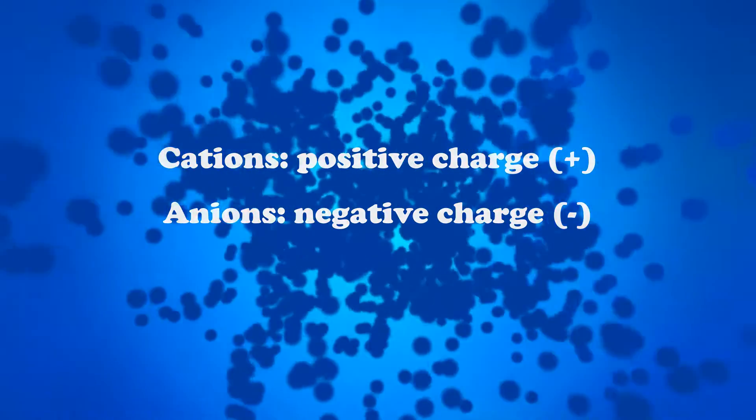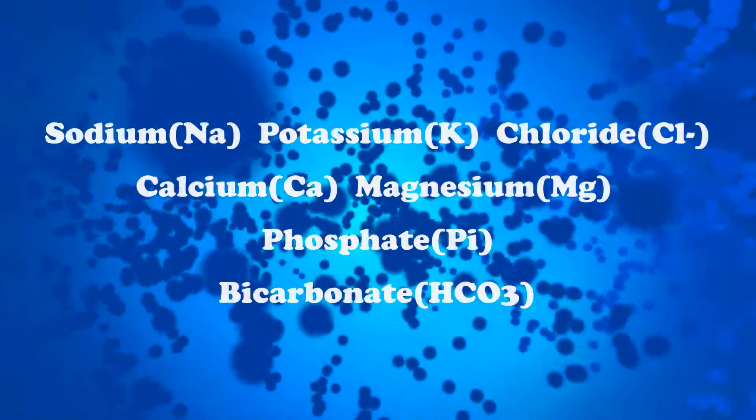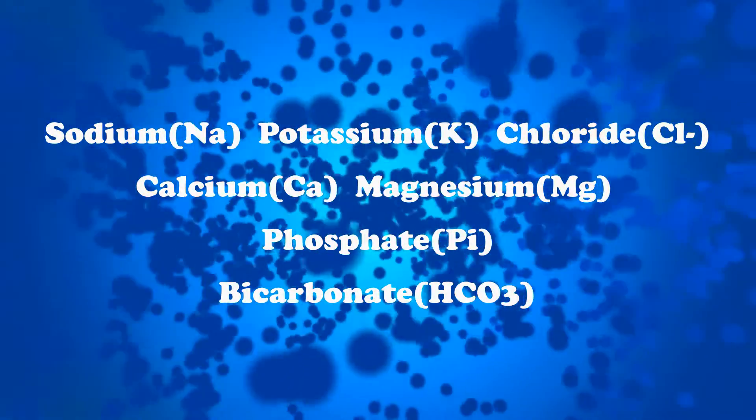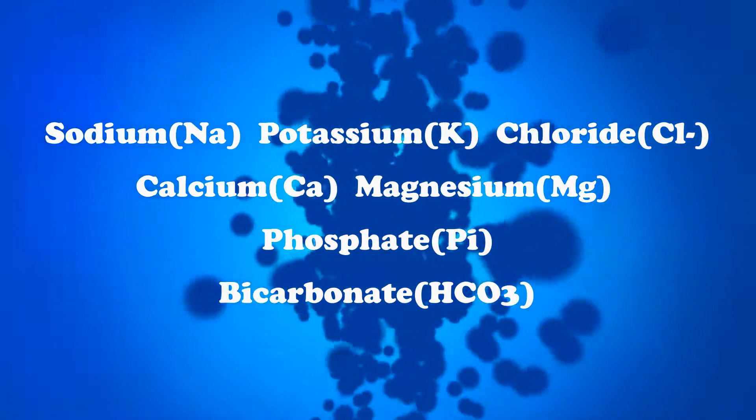The main electrolytes that we find in our bodies are sodium, potassium, chloride, calcium, magnesium, phosphate, and bicarbonate.